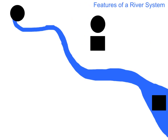A river flows from its source to its mouth. It is sometimes thought that a river flows from the sea inland. In fact, it flows from the source, which on this example is indicated by the circle, to its mouth, which is shown by the square.